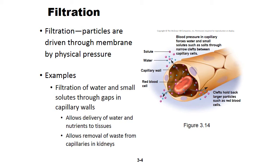Filtration involves blood pressure allowing certain particles and nutrients to be filtered out of the blood — you'll cover this in the urinary system in Anatomy 2. Small molecules like water and solutes can penetrate the gaps in capillary walls, but blood cells cannot because they are too large. Those nutrients must travel through the body to feed the tissues and cells.